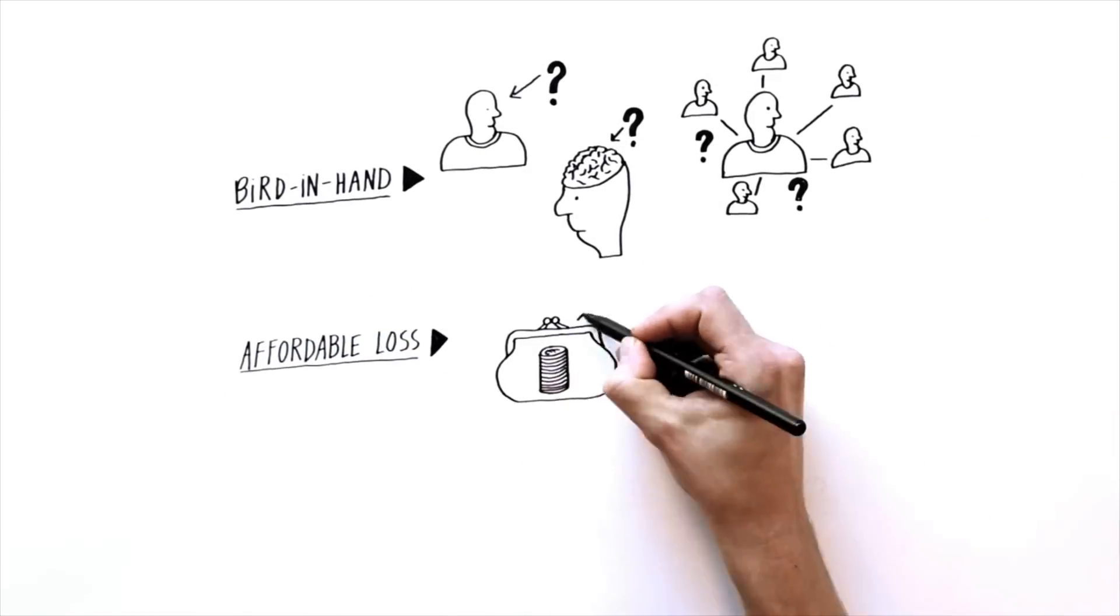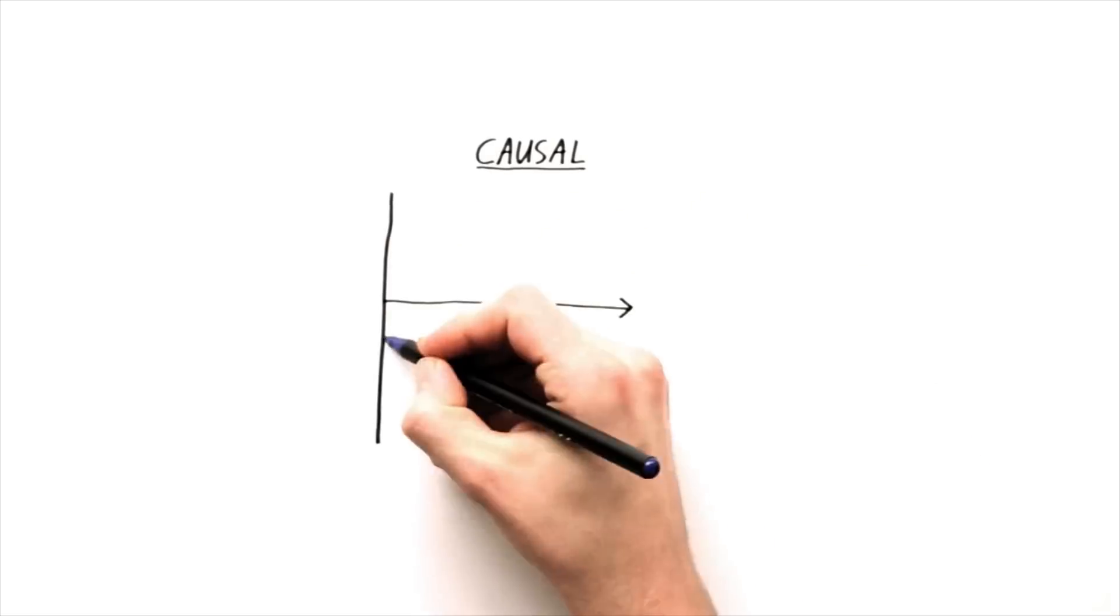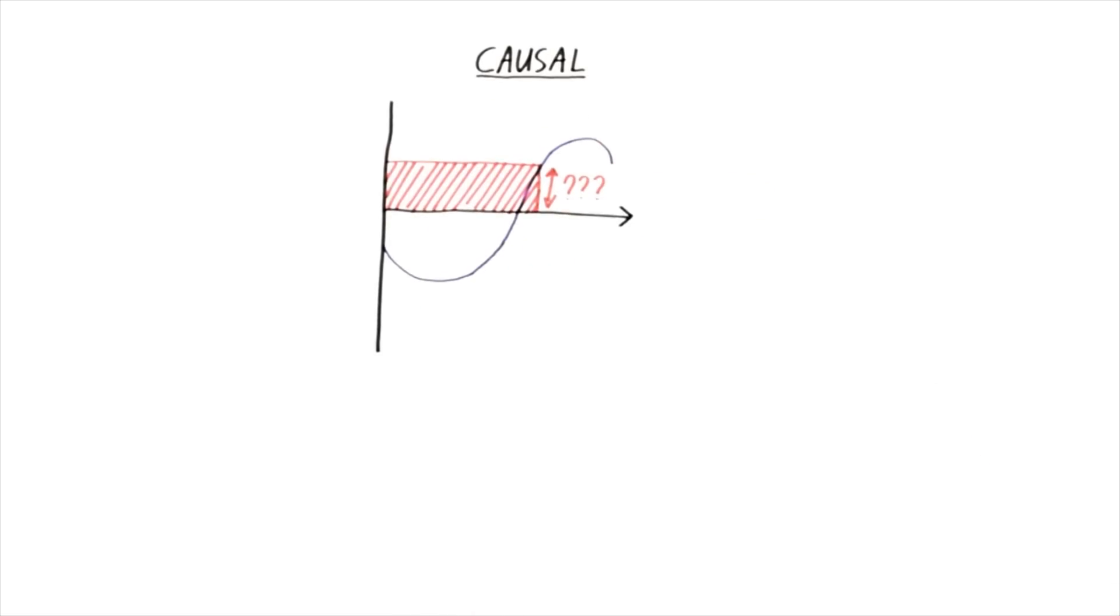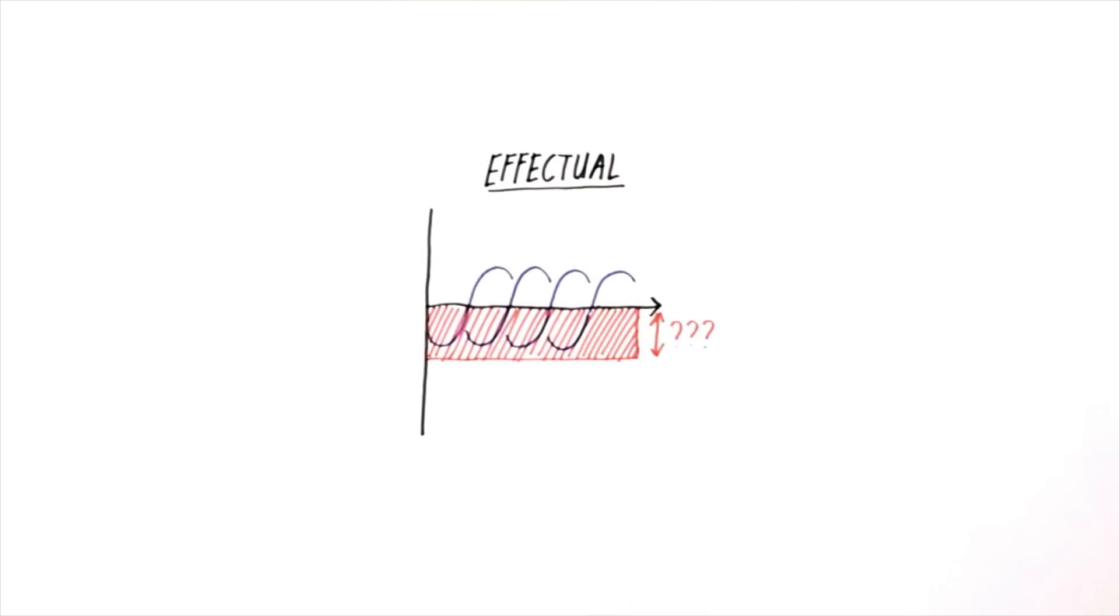The second principle, affordable loss. Not focusing on the upside, based on prediction and historic data, but focus on the downside. How can I limit my possible loss?